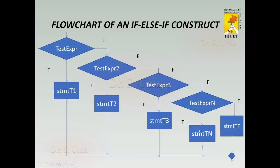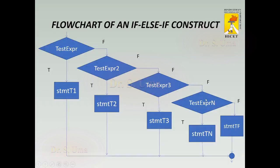The flowchart for the if-else-if construct is given in this slide. First, we have the test expression that is evaluated. If it evaluates to true, then statement T1 will get executed. Otherwise, we go for evaluating test expression 2. If it is true, then statement T2 will get executed. If it is false, then test expression N will be evaluated. If it is true, then statement TN will get executed. Else, statement Tf will get executed.